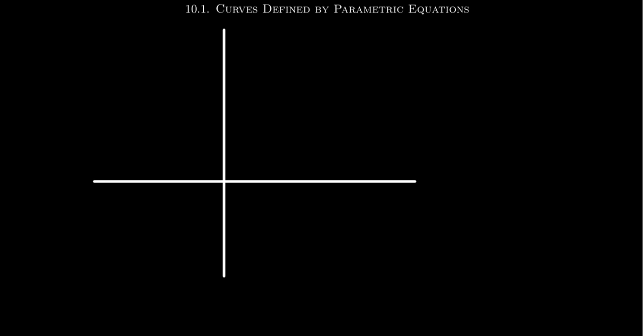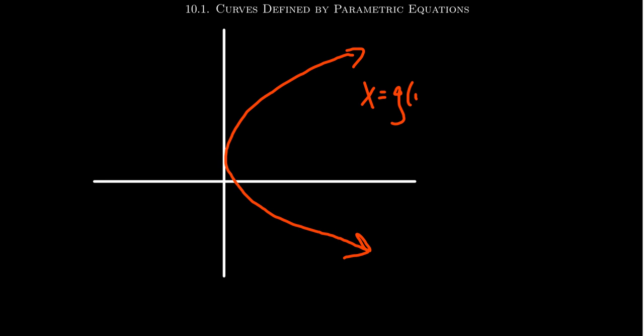The problem with that discussion is it's an argument that shows whether y is a function of x or not. There are other options. If we have a concave-right parabola, although this graph fails the vertical line test, it does pass the horizontal line test. So while y is not a function of x, we can express x as a function of y. Our perspective of function has to evolve as we go forward.